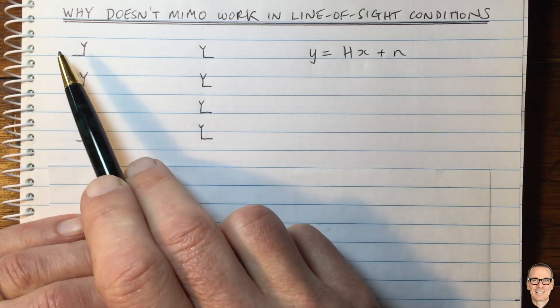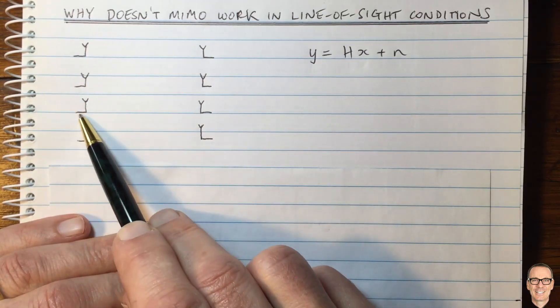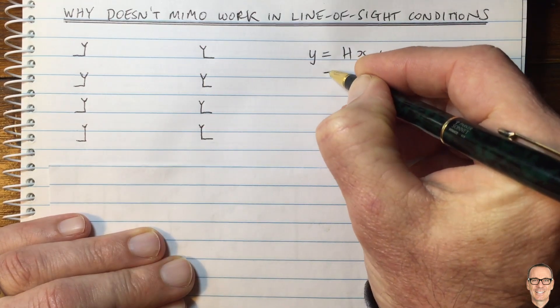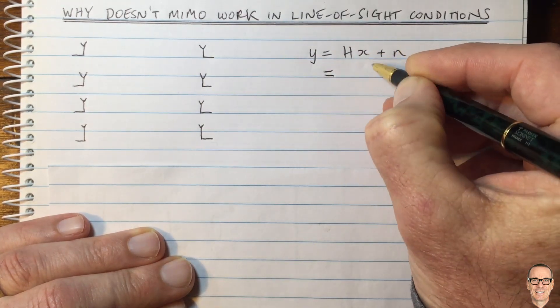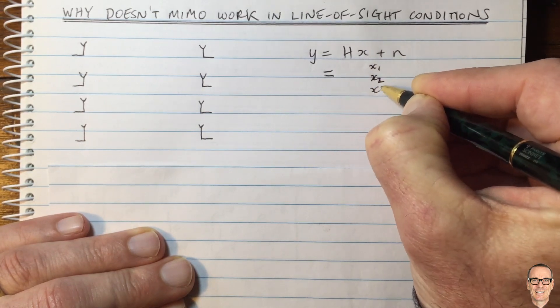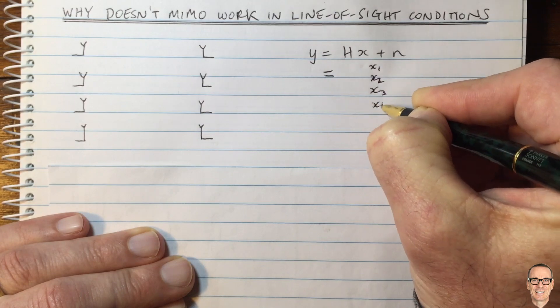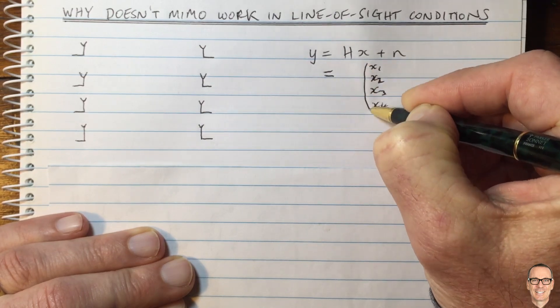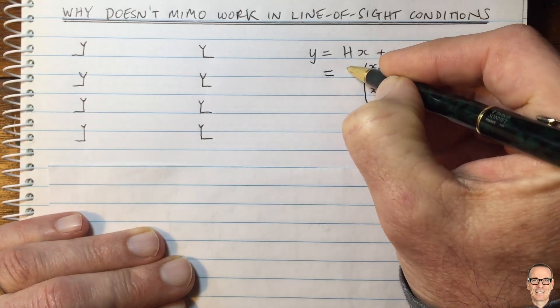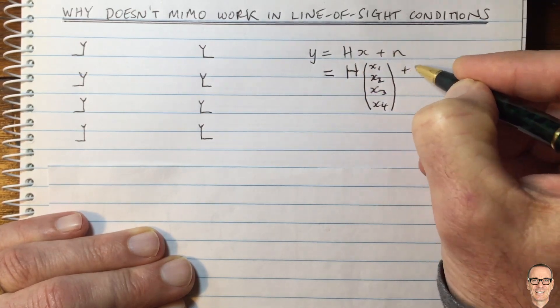So what does that mean? That means we're sending different symbols, different data, at each of the transmit antennas. In this case, this X value here is a vector of X1, X2, X3, and X4. I've shown a 4x4 case, so this is a vector of four different elements.